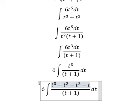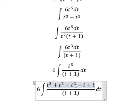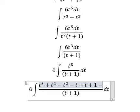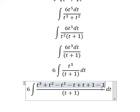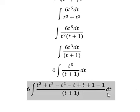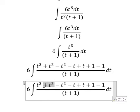Next I need to add t squared, then minus t squared, then put negative t, then positive t, then add positive one, then put negative one — because I want to create a factor divided by t plus one. So we can do factorization here.